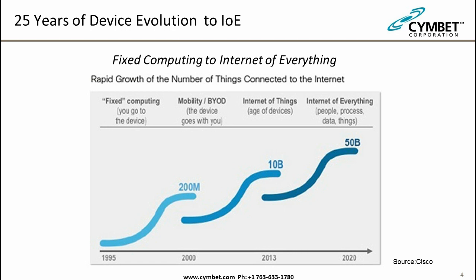This slide courtesy of Cisco shows the last 25 years of computing. In the 90s, we used our PCs and computer terminals. Then our devices became mobile. Into the early 2000s, we saw smart things — the Internet of Things. Now intelligence is in the fabric of everything, applying to people, process, data, and things. This is the Internet of Everything, where sensors will be embedded in your clothes, washing machine, car, home, and pets, all communicating together in a seamless environment.